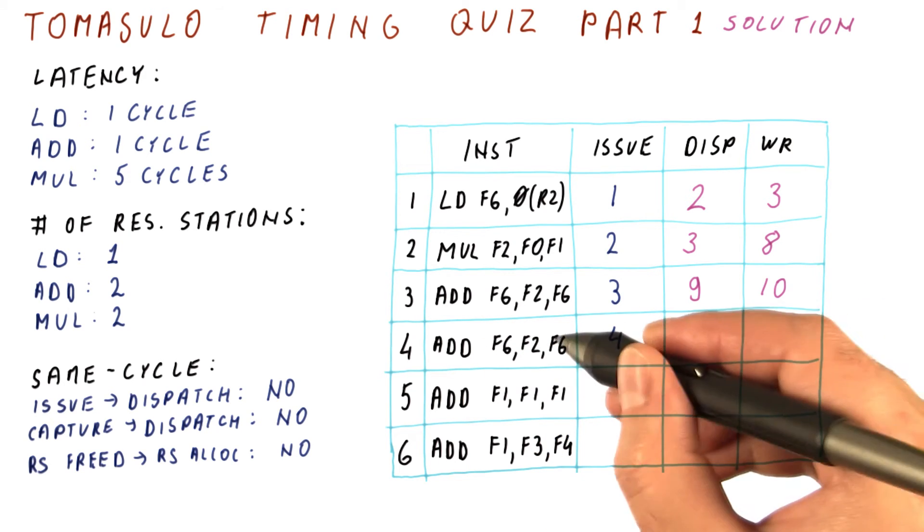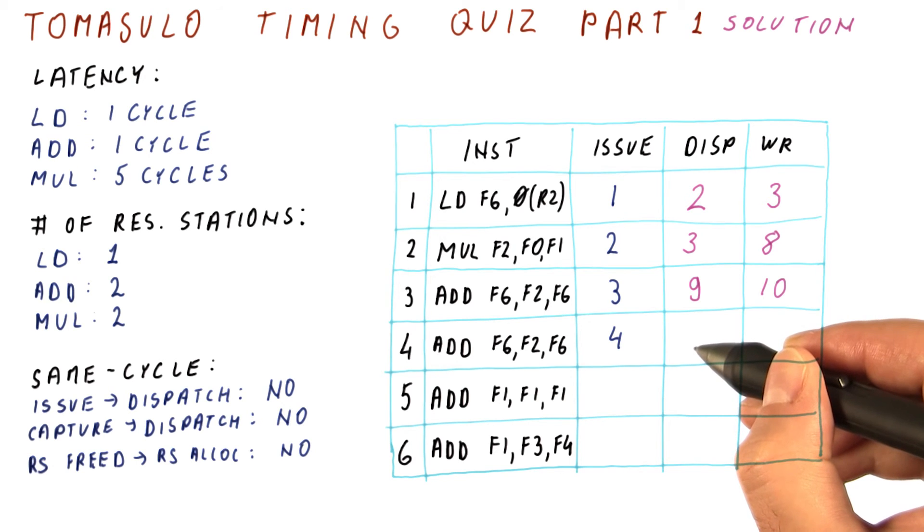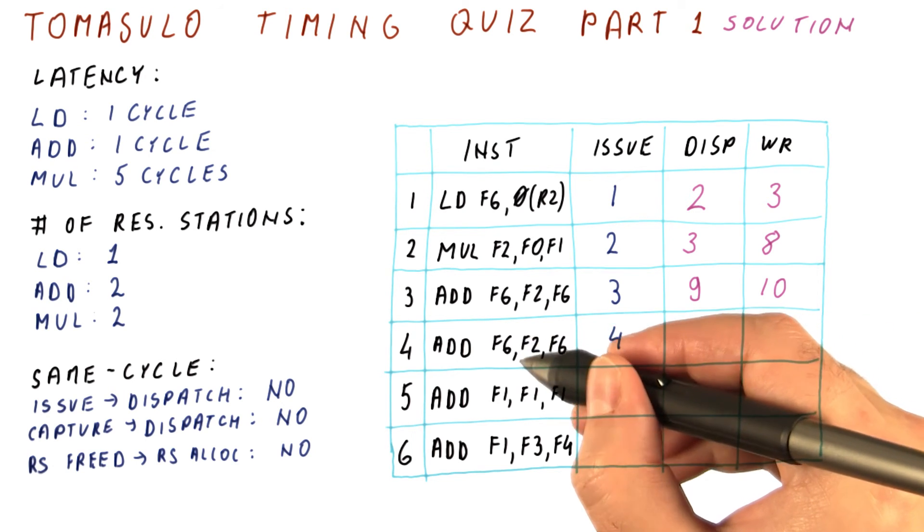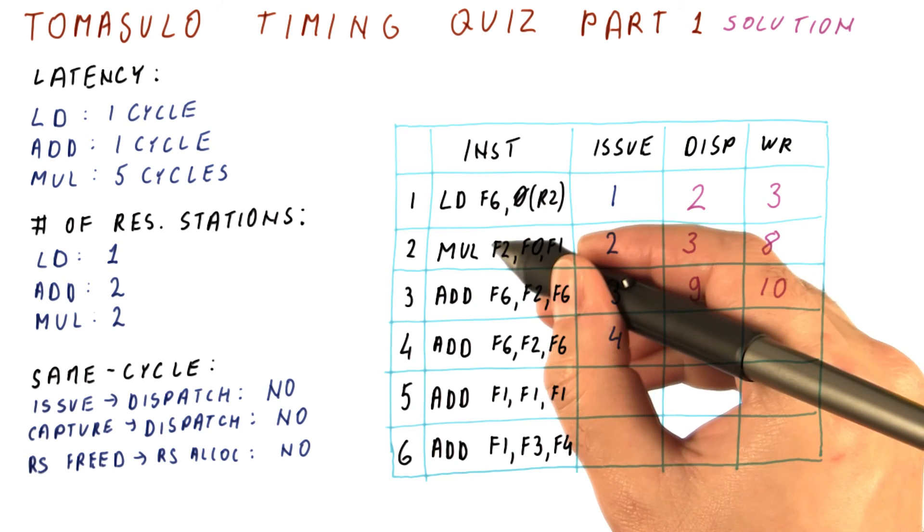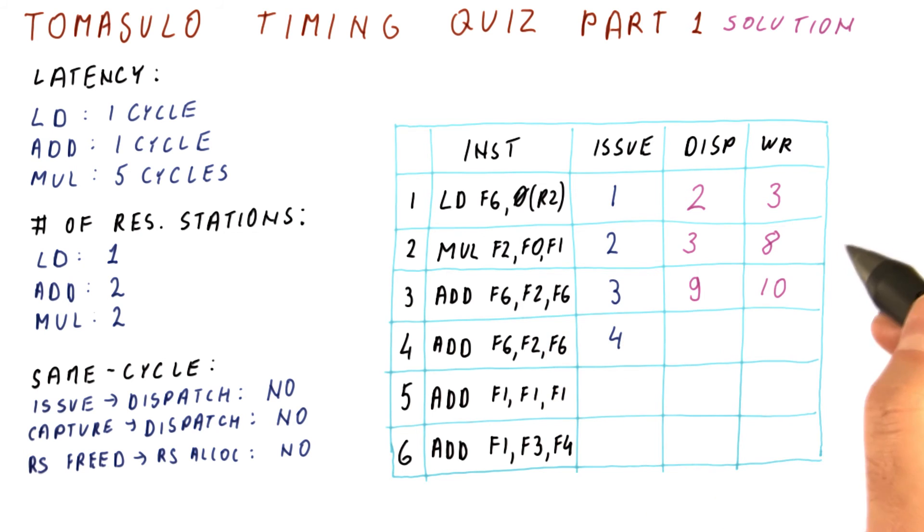For this add here, it issues in cycle four and becomes eligible for dispatch in cycle five if its operands are ready, but they're not. It needs the F2 produced by the multiplication and the F6 produced by this add. That means it will capture its last missing operand at the later of these two cycles, which is cycle ten.